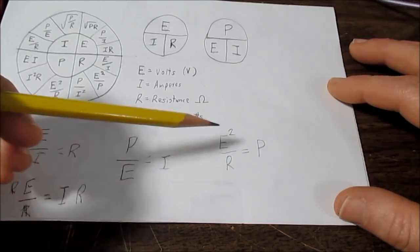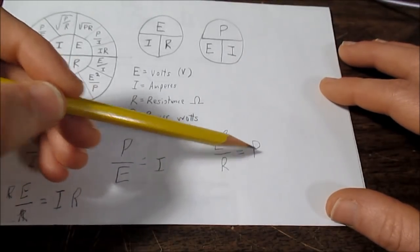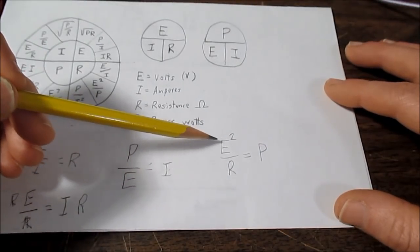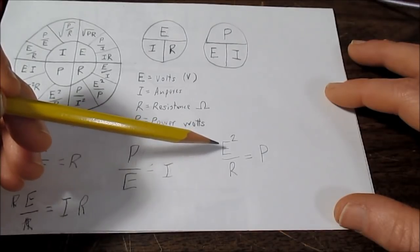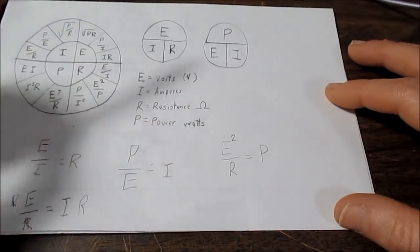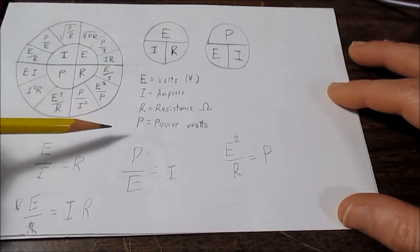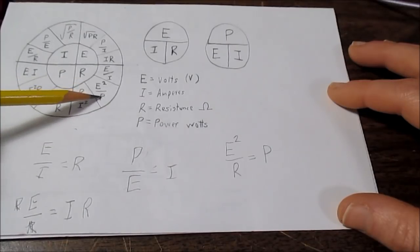And remember, just like over here, these are interchangeable. So if you have the voltage and power, you can calculate resistance. So, E squared over P is R. And right here, E squared over P is R.